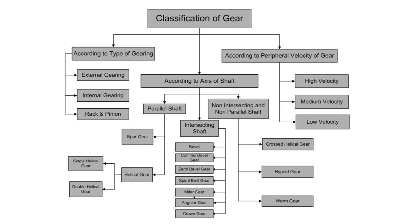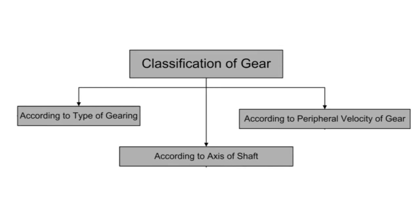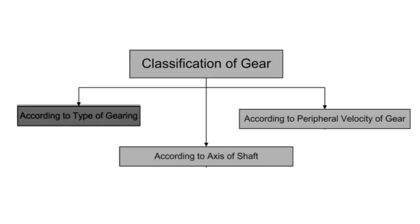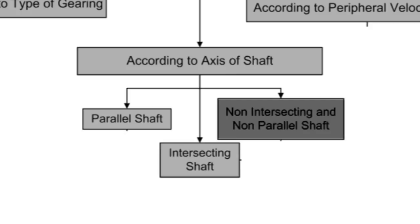This is a flow chart of gear classification. Gears are classified into three groups: according to the axis of shaft, according to peripheral velocity of the gear, and according to the type of gearing. According to the axis of shaft, gears are classified into three groups: parallel shaft gears, intersecting shaft gears, and non-intersecting or non-parallel shaft gears.